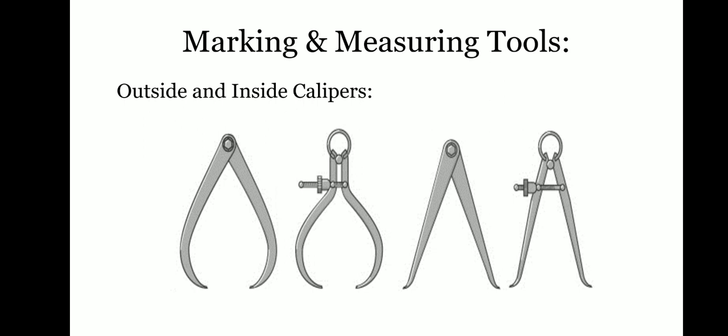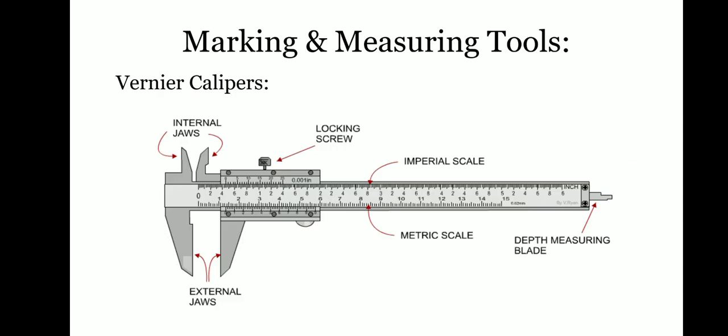The next one is the vernier caliper. As you can see on the screen, this device is a vernier caliper. It has two external jaws and internal jaws, a locking screw, an imperial scale, a metric scale, and a depth measuring blade. A vernier caliper is used for measuring the outer dimensions of round, flat, and square components.